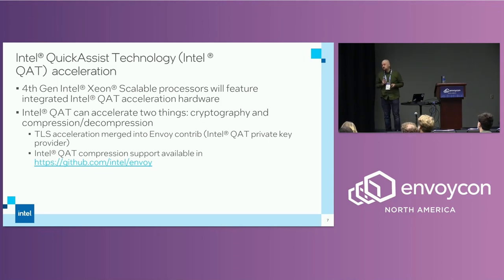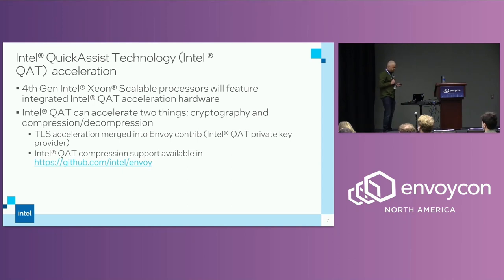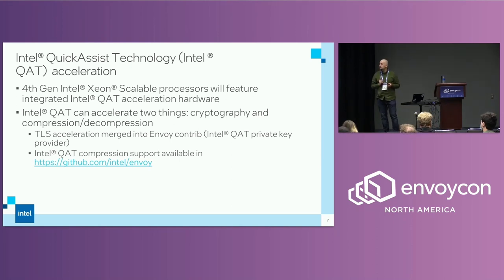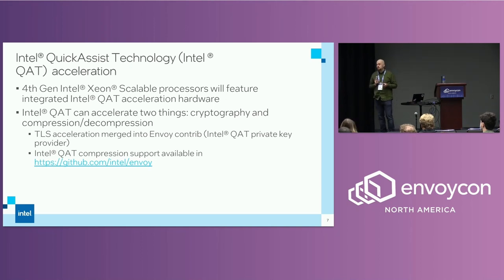Now the actual technology: Intel Quick Assist Technology, or QAT. This is present in 4th gen Intel Xeon Scalable Processors — not yet available in processors you can buy from the shop, but coming in the next generation. During the summer, TLS handshake acceleration using QAT was merged into Envoy as a Contrib filter extension. There is also support for using QAT for accelerating compression, but that's not part of Envoy yet — it's more experimental code.